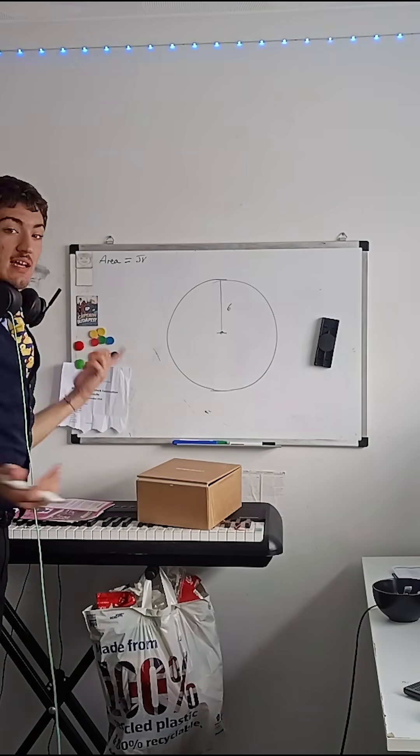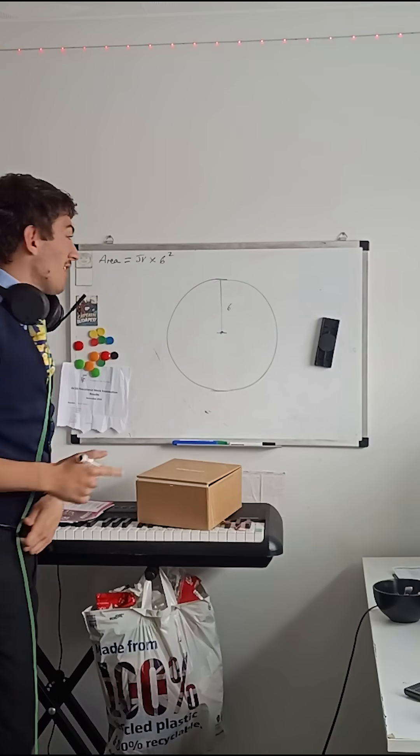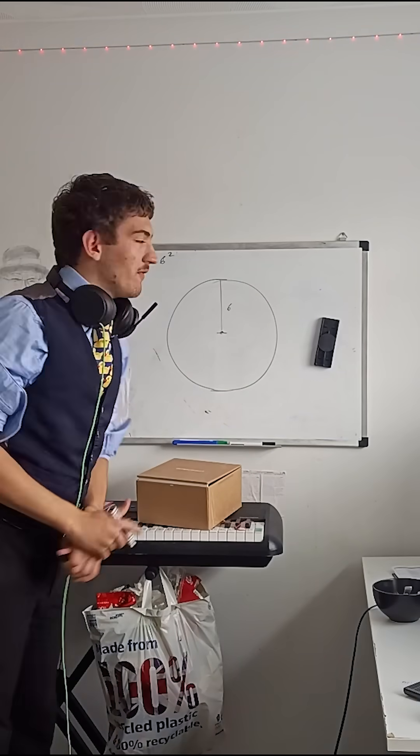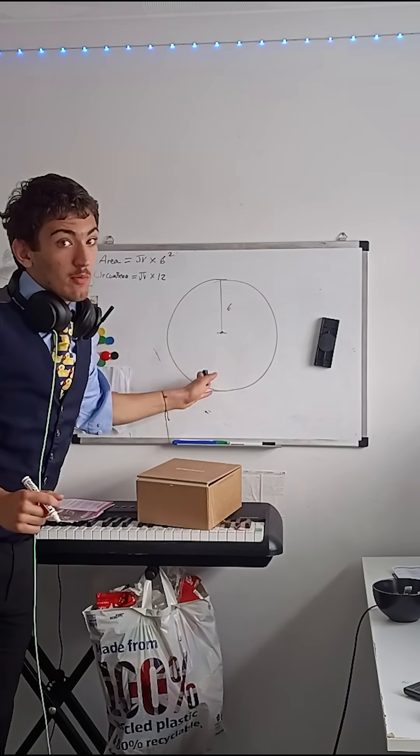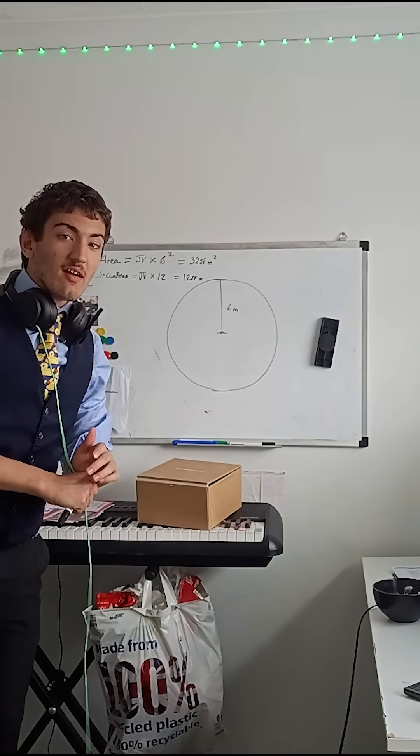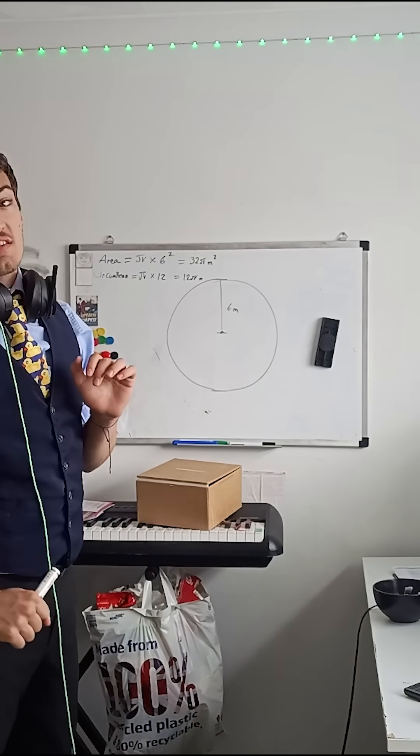The area would be pi times six squared, and the circumference would be pi times 12, because the diameter is just radius doubled. Making 32 pi as the area and 12 pi as the circumference.